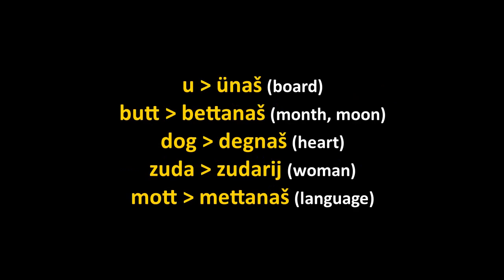U is 'board'; the plural is ünash. But is 'month' or 'moon'; the plural is betunash. Dog is 'heart'; the plural is degunash. Zud is 'woman'; zudari is 'women.' Mot means 'language'; metunash means 'languages.'